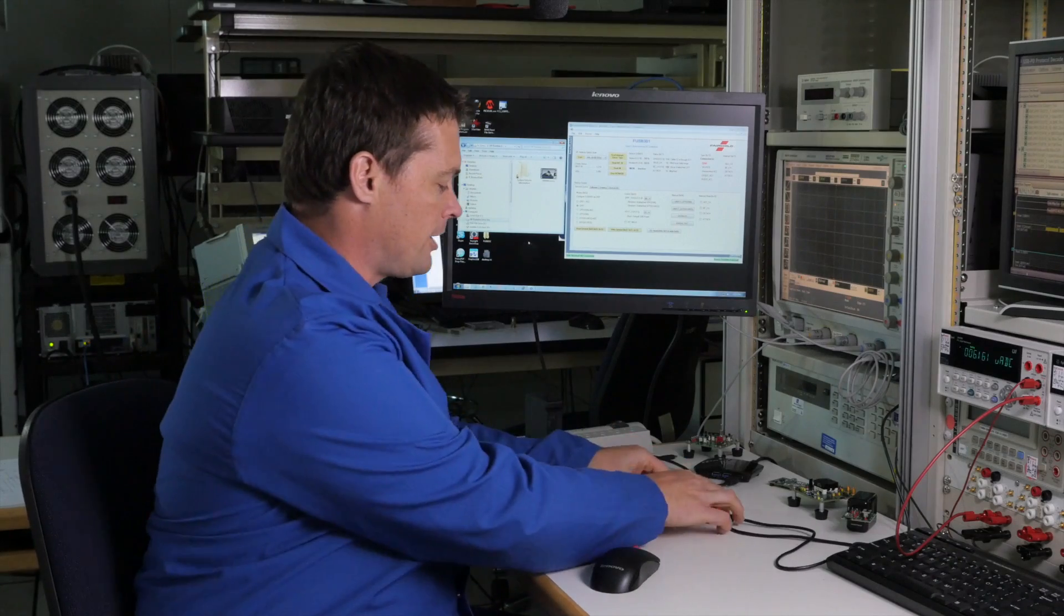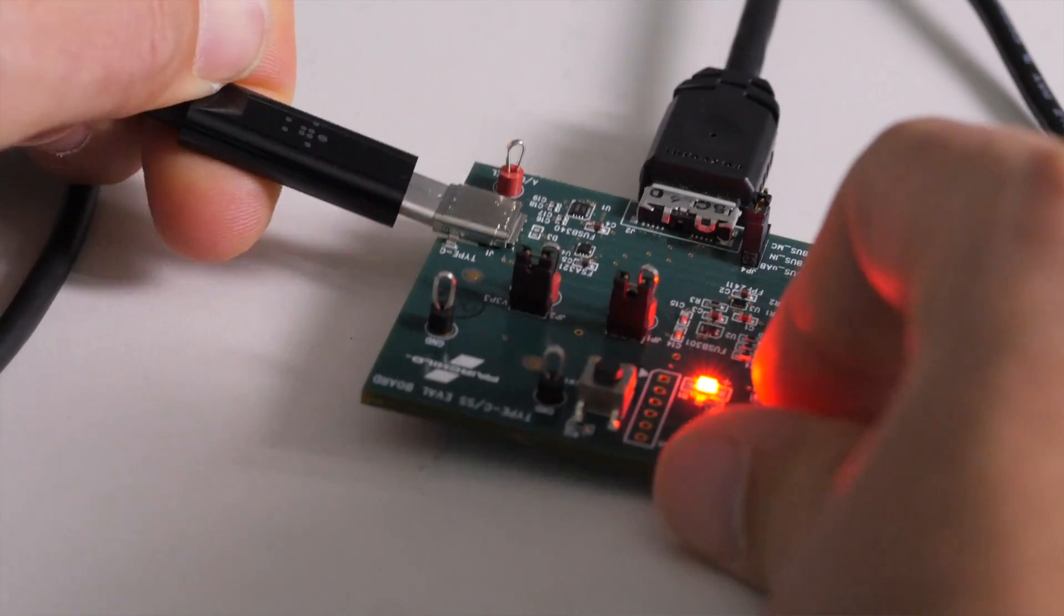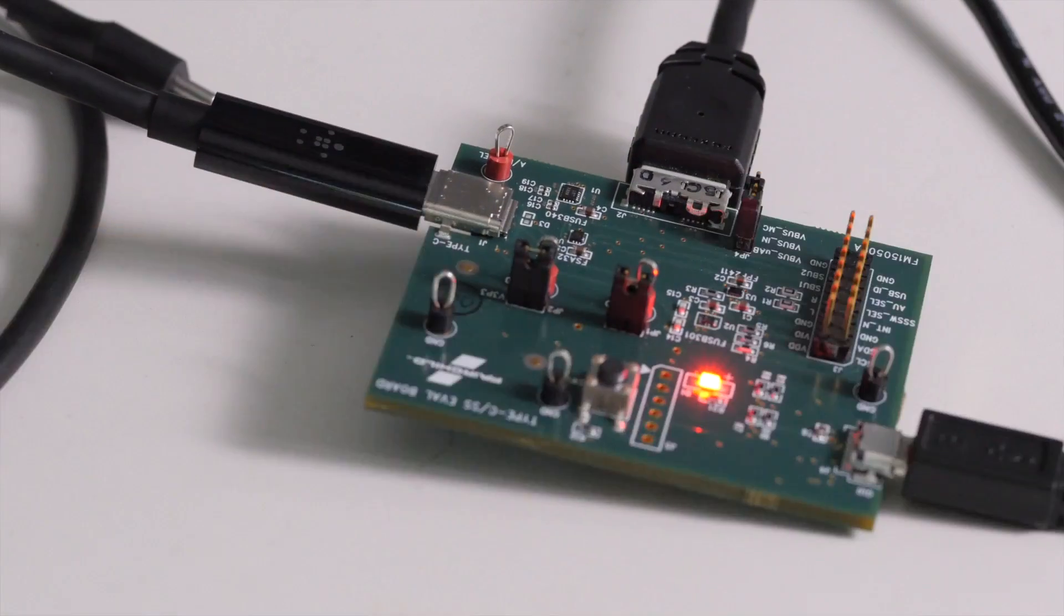If I invert the connection, the results are similar. The FUSB301 and FUSB340 work together to detect the connection and route the super-speed signals properly, independent of how the connector is inserted.